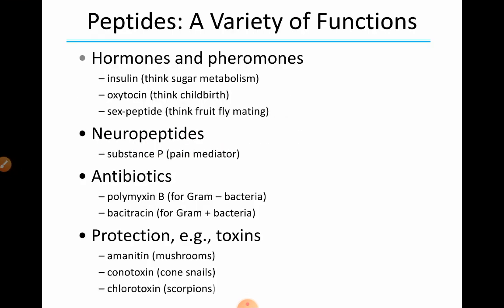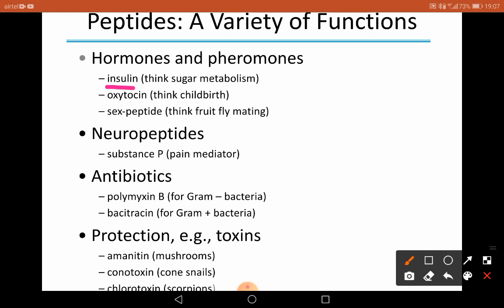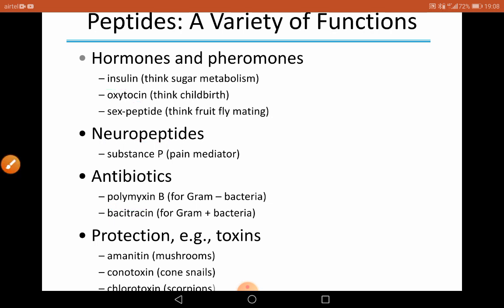Peptides are very important and perform a variety of functions. They work as hormones and pheromones. Insulin regulates sugar metabolism and is a peptide hormone made up of a small number of amino acids. Oxytocin is associated with childbirth. Sex peptide is involved in fruit fly mating. Neuropeptides like substance P mediate pain. Antibiotics like polymyxin B and bacitracin act on gram-positive and gram-negative bacteria. Amanitine is present in mushrooms, chlorotoxin in scorpions, and conotoxin in cone snails — all are examples of biologically important peptides.